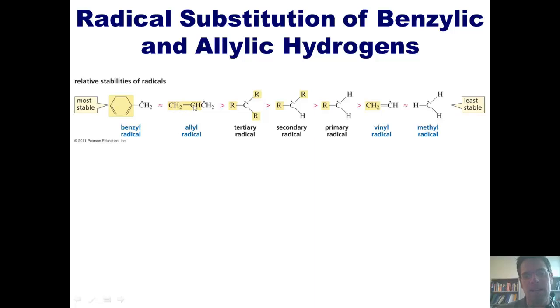Similarly, an allylic hydrogen is a hydrogen that is attached to a carbon that's one carbon away from a carbon-carbon double bond. If I remove that hydrogen radically, it ends up giving me a radical carbon that's one position away from a carbon-carbon double bond.